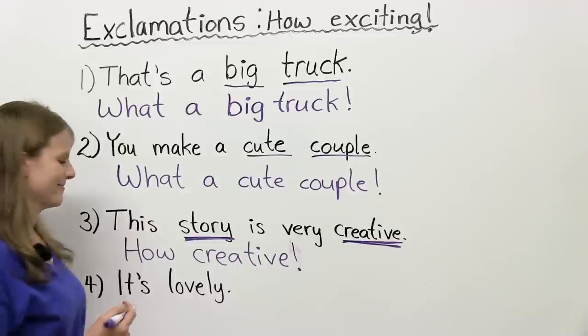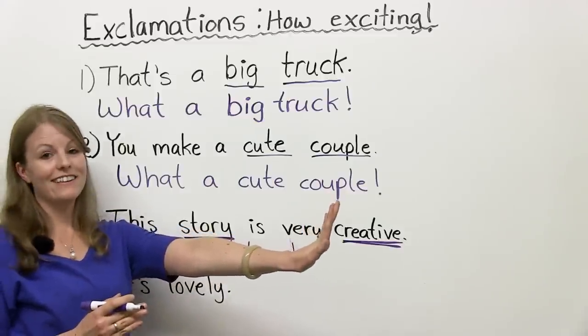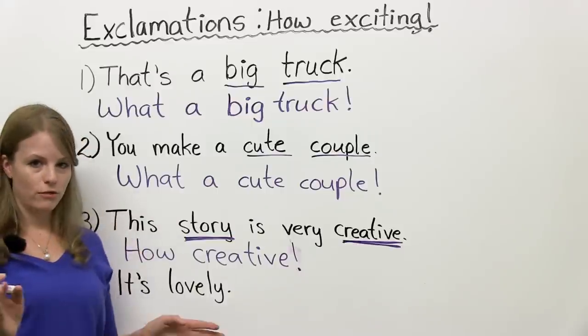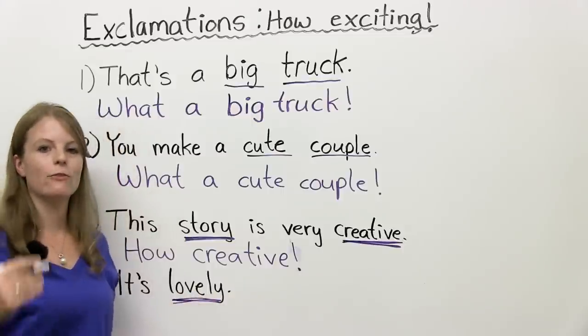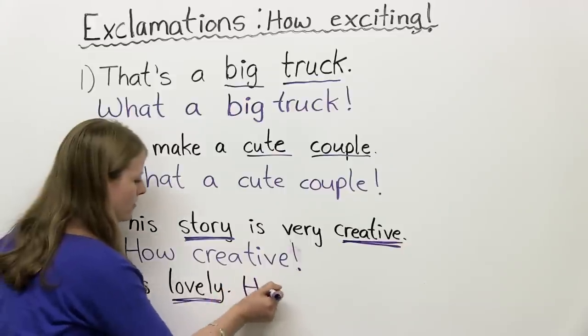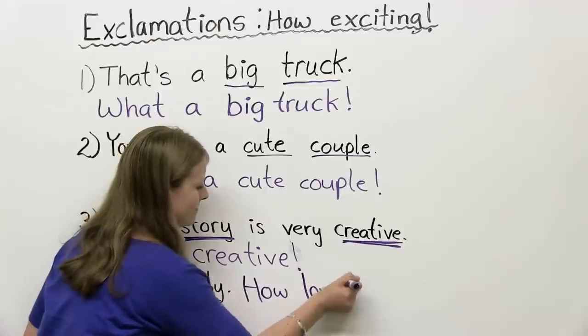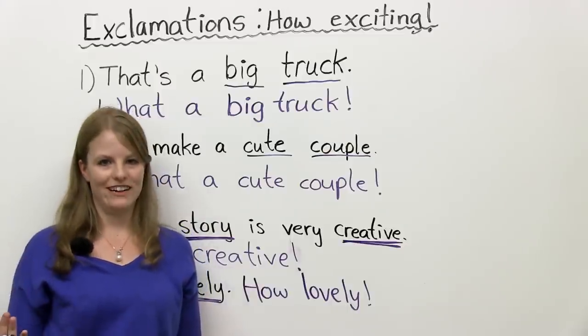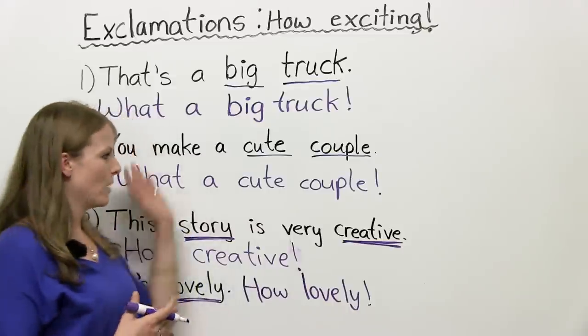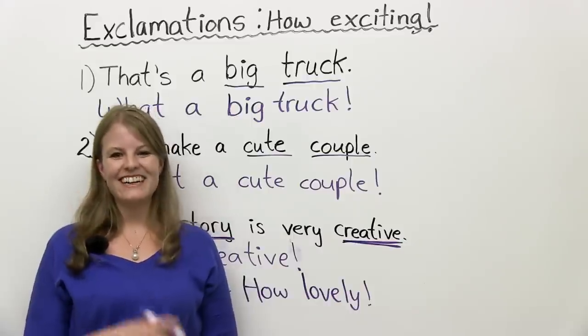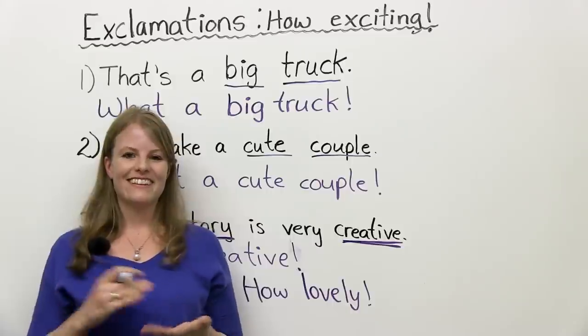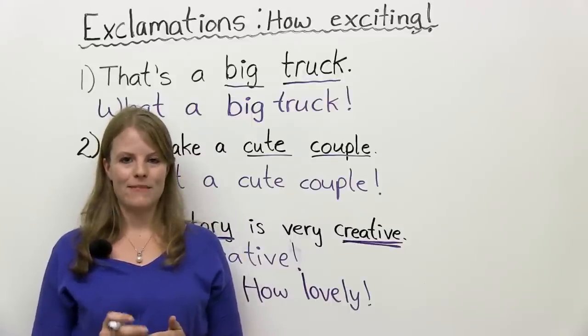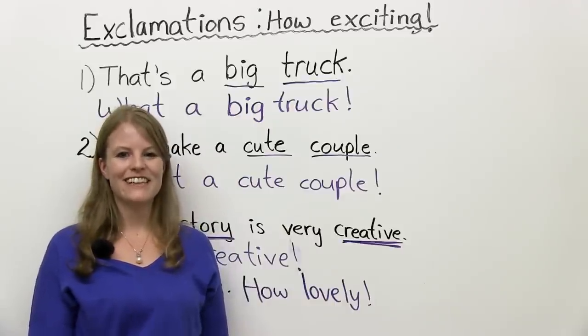Finally, number four. Maybe I'll admire my ring. It's lovely. How can we change this into an exclamation? Do we have a noun? No. Do we have an adjective? Yes. So with just an adjective, we can use how. We can say, how lovely. How lovely. So again, this is used in conversation English. What an interesting video. Also, how exciting this video is. So if you want to practice this more, you can come to www.engvid.com and you can practice on our quiz. So until next time, take care.